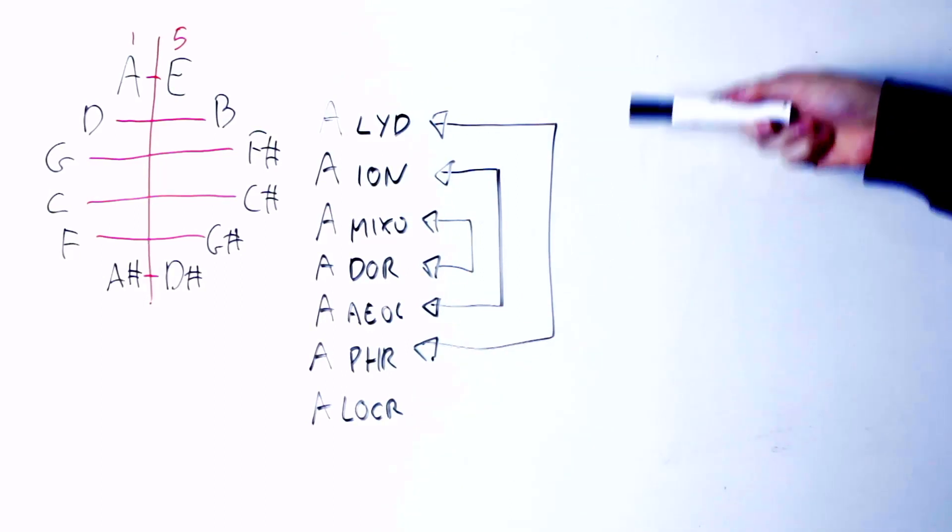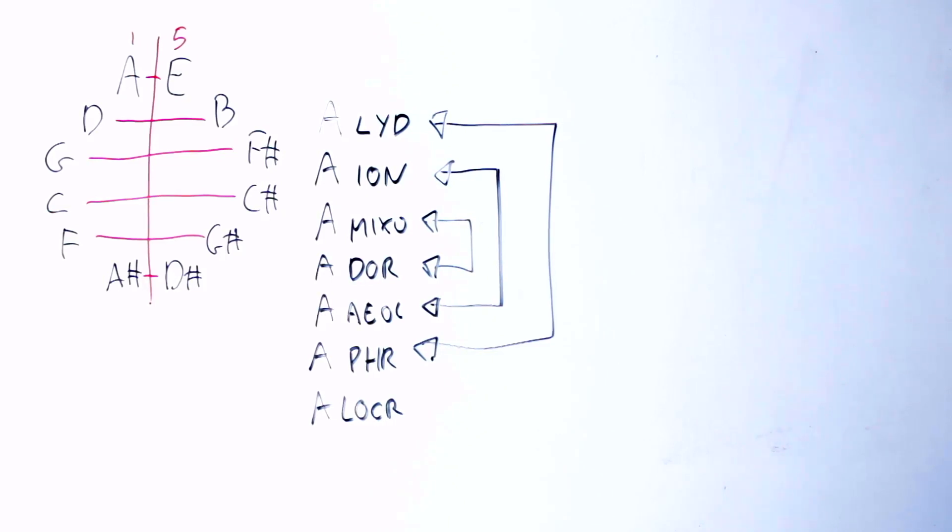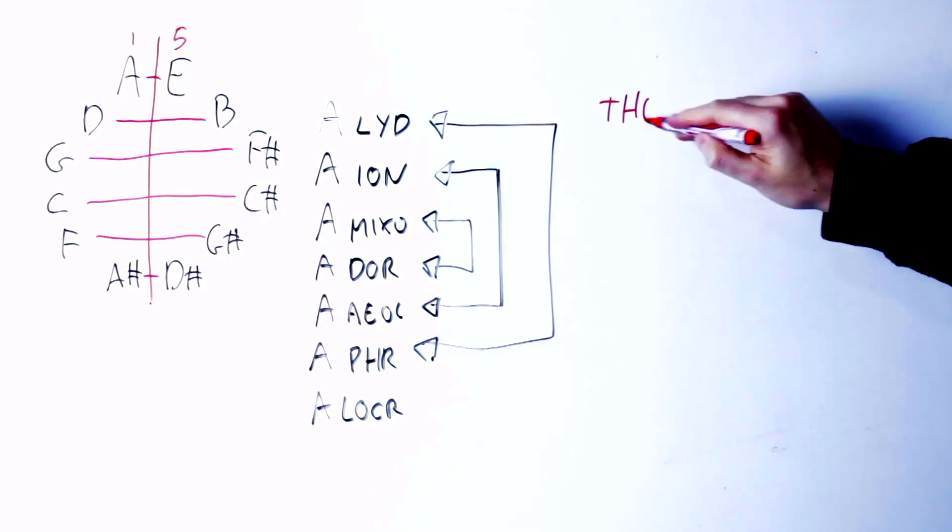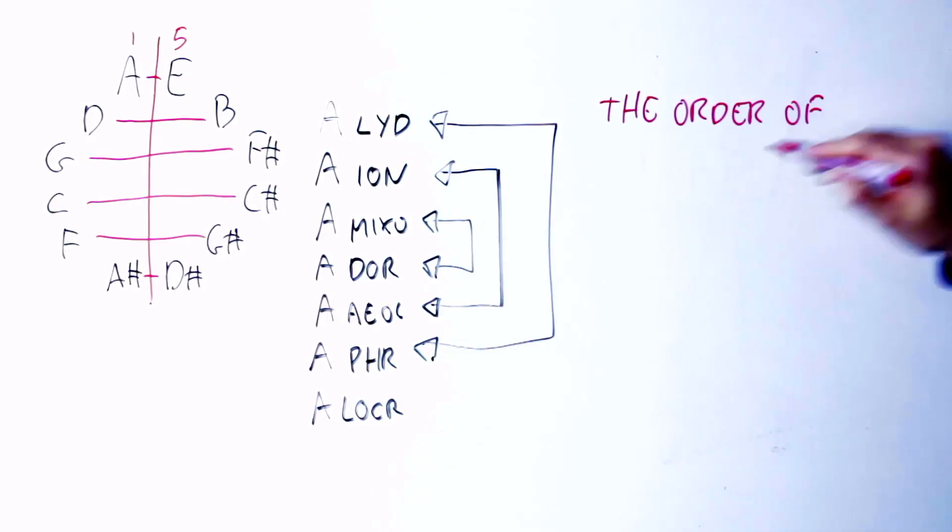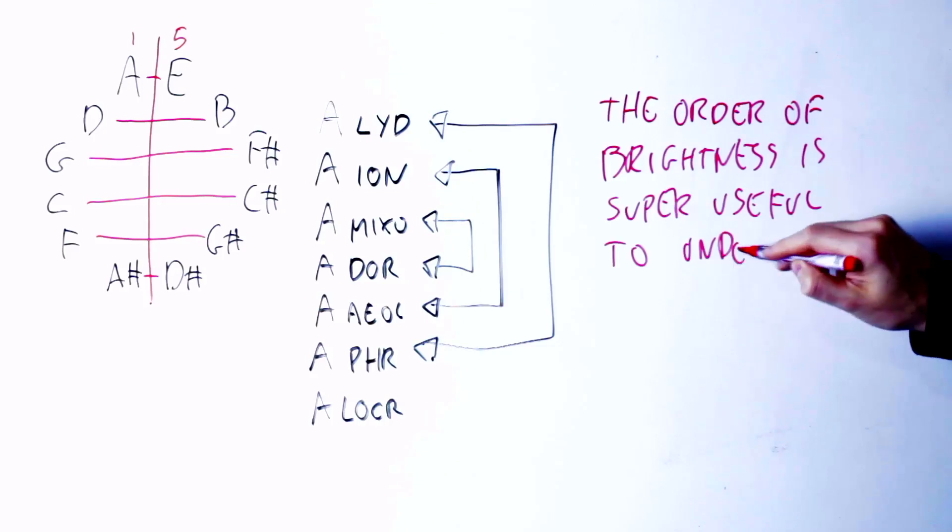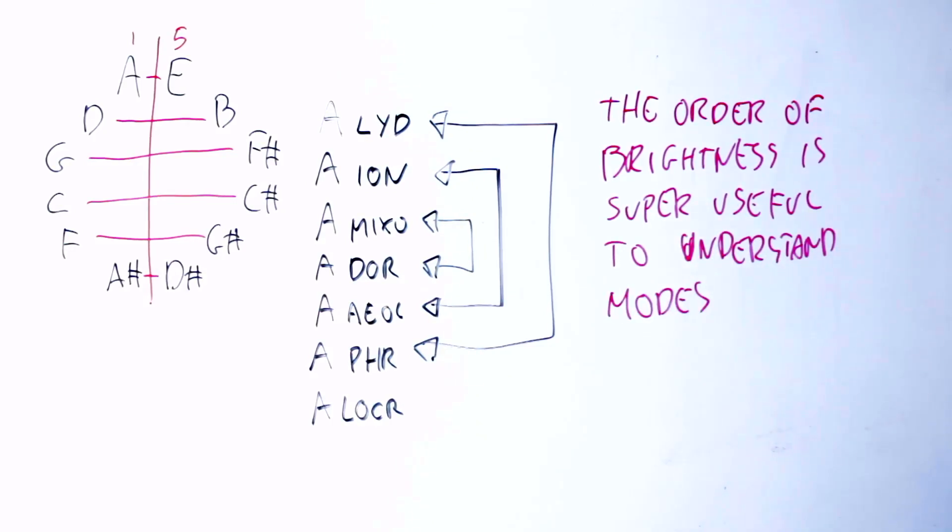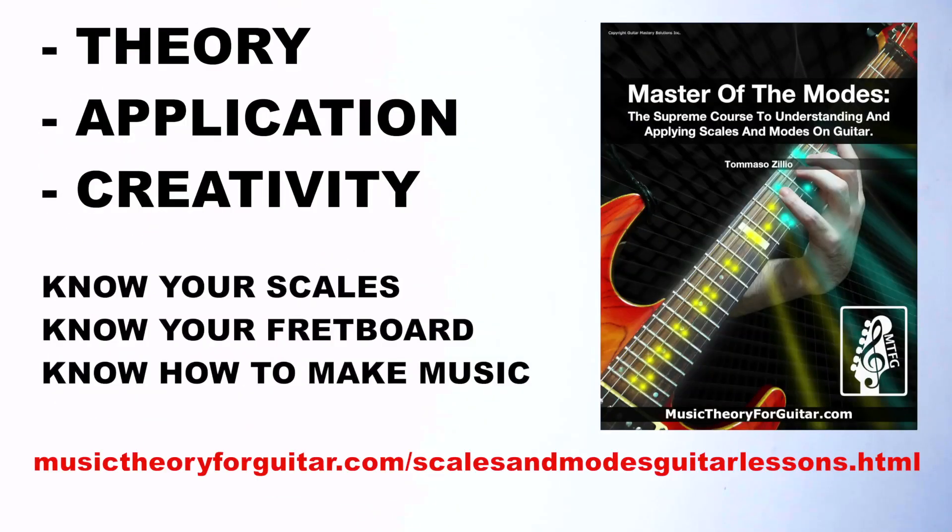As you can see, a tool like the order of brightness allows us to see exactly what negative harmony does to modal scales. This is but one possible use of the order of brightness, and as I was saying, this is just 1% of what you can do with it. To know more about the modes and the order of brightness, and how you can use them to play on your guitar and make your music, I really suggest you have a look at my course, Master of the Modes.